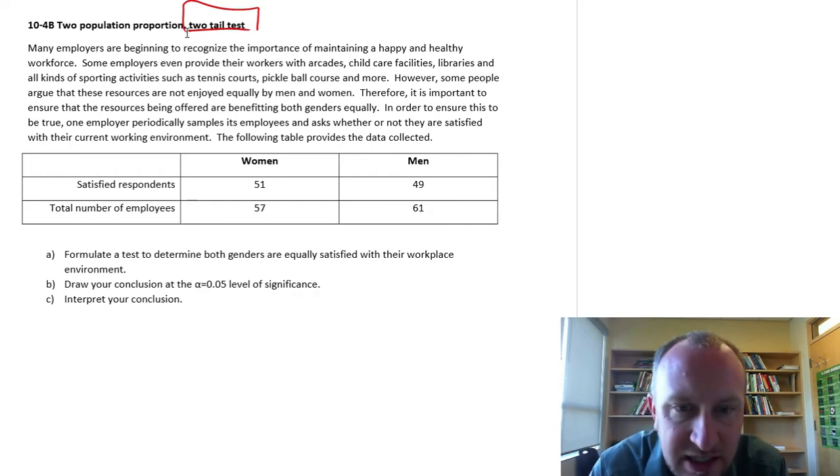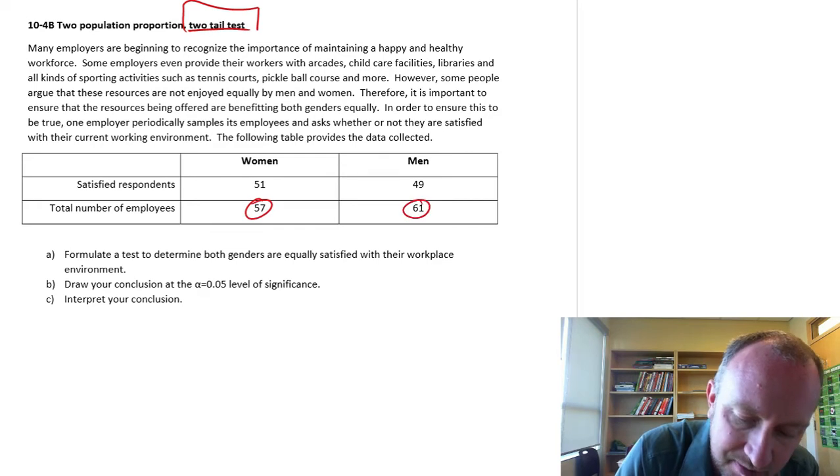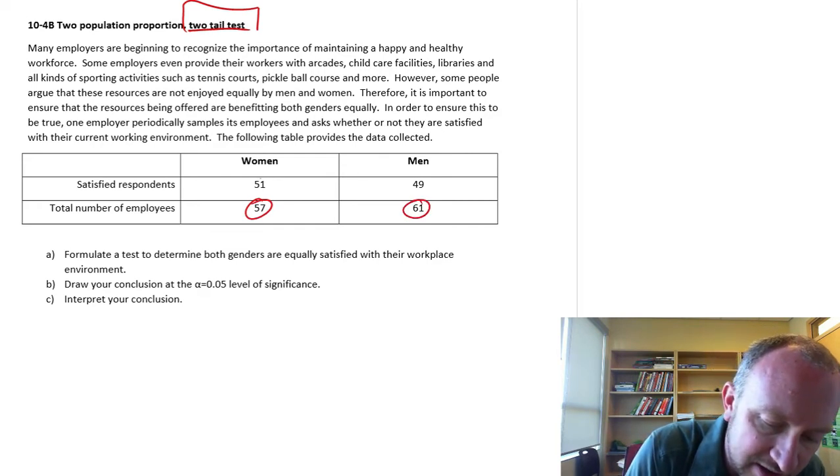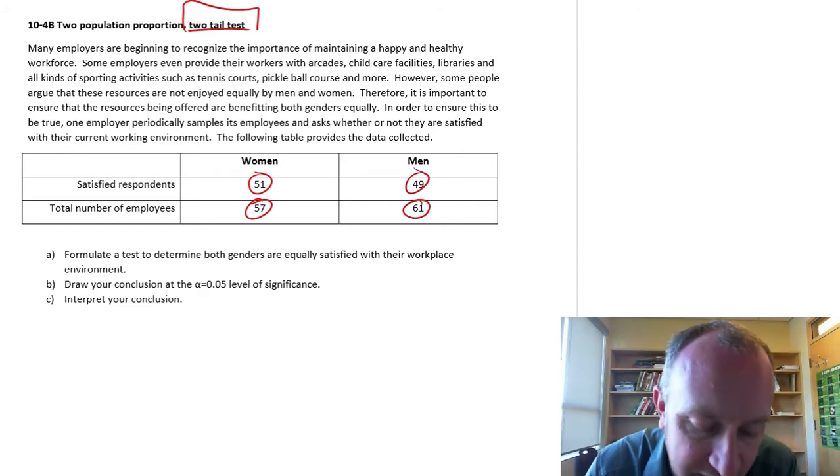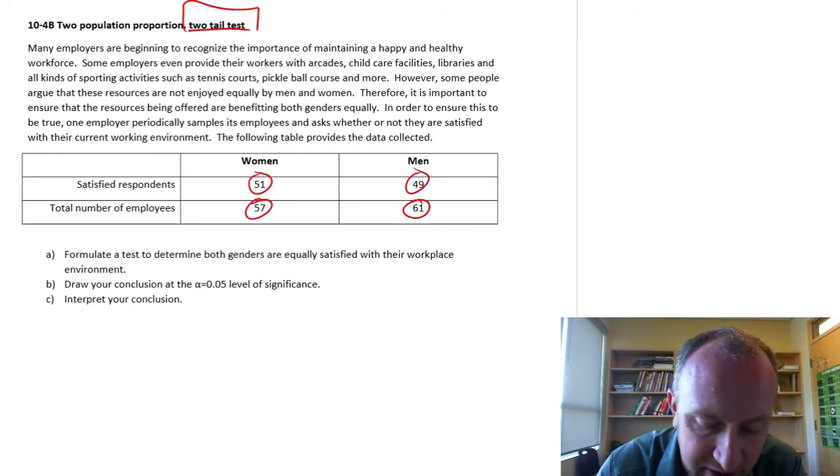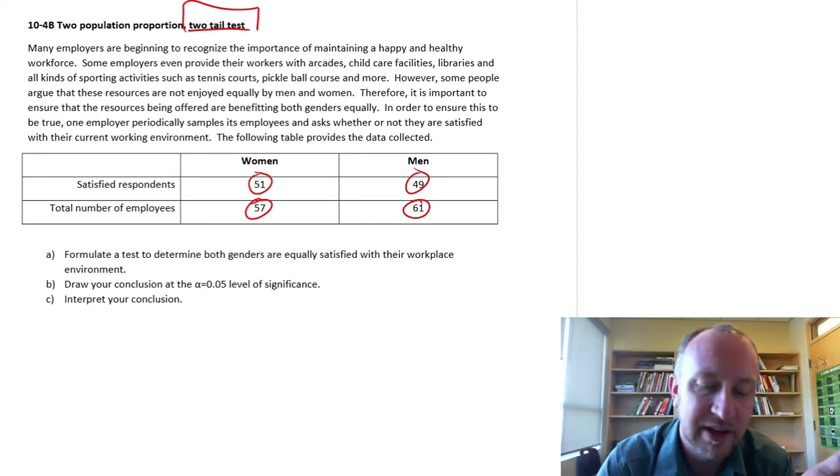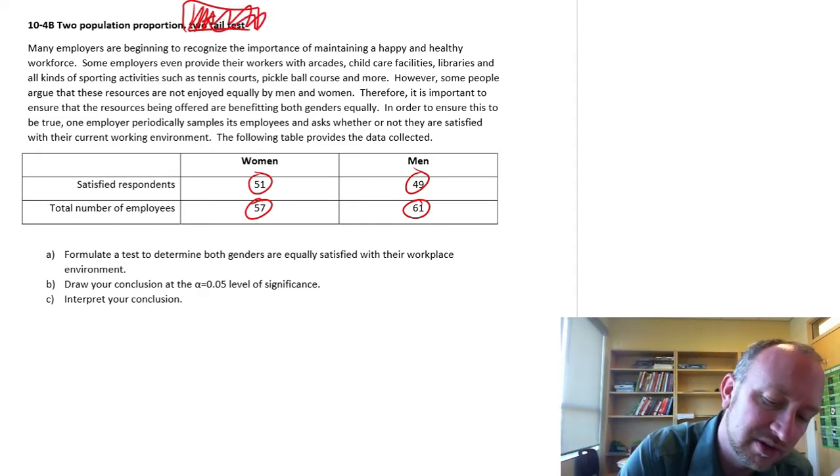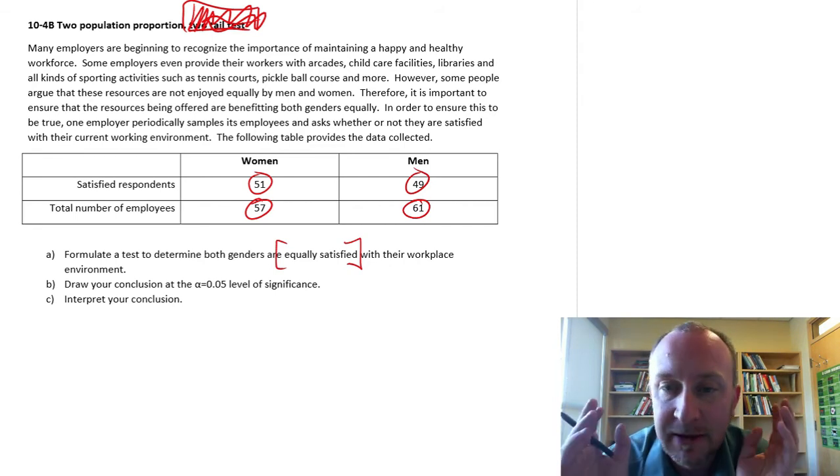So here's our data. We've got 57 women sampled, 61 men sampled, and here's the number of satisfied respondents in that survey. Formulate a test to determine both genders are equally satisfied with their workplace environment. Without even being told it's a two-tail test, we're performing a test to see that they are equally satisfied. So those two proportions of satisfied individuals are equal across gender.